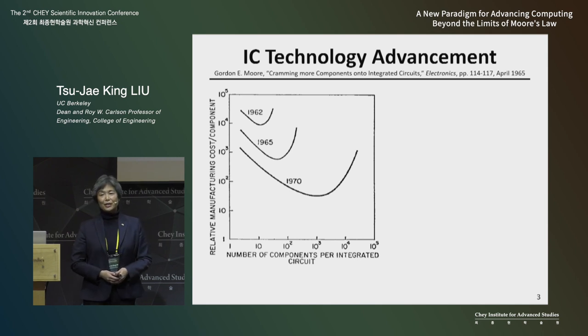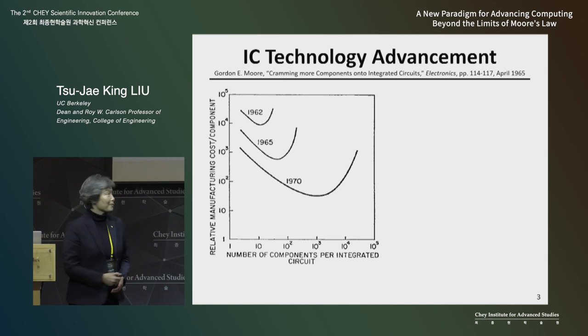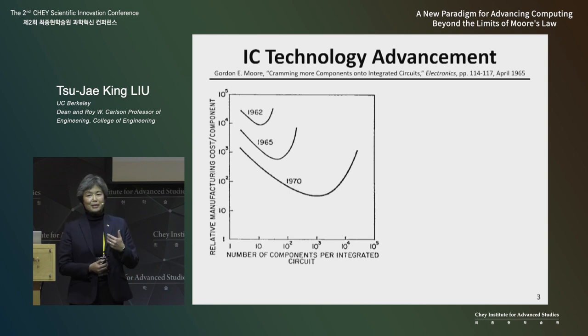Moore's Law — this graph was taken from the paper published in 1965 by Mr. Gordon Moore, co-founder of Intel Corporation. This chart shows the cost of manufacturing a transistor as a function of the number of transistors on a chip. An integrated microchip has many switches called transistors, and the smaller the transistors are, the more you can fit on a chip.